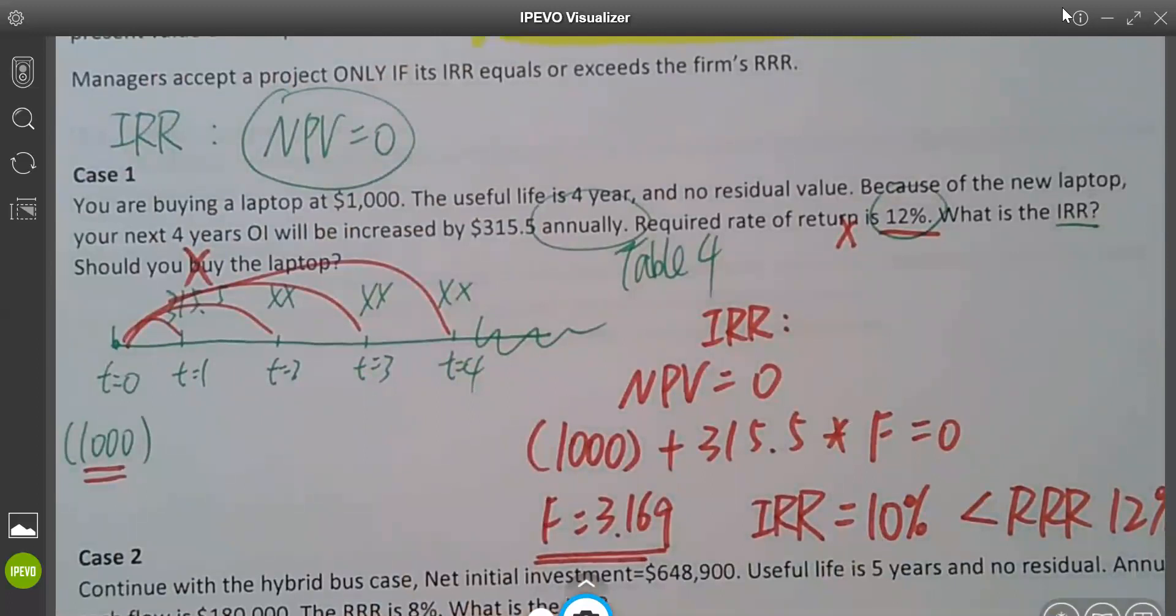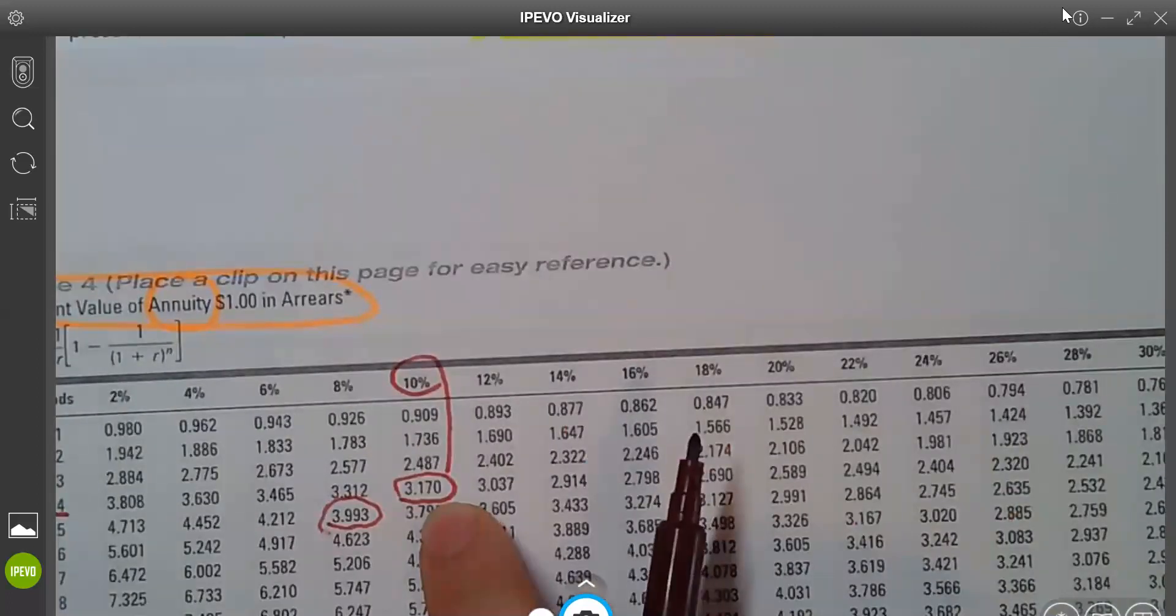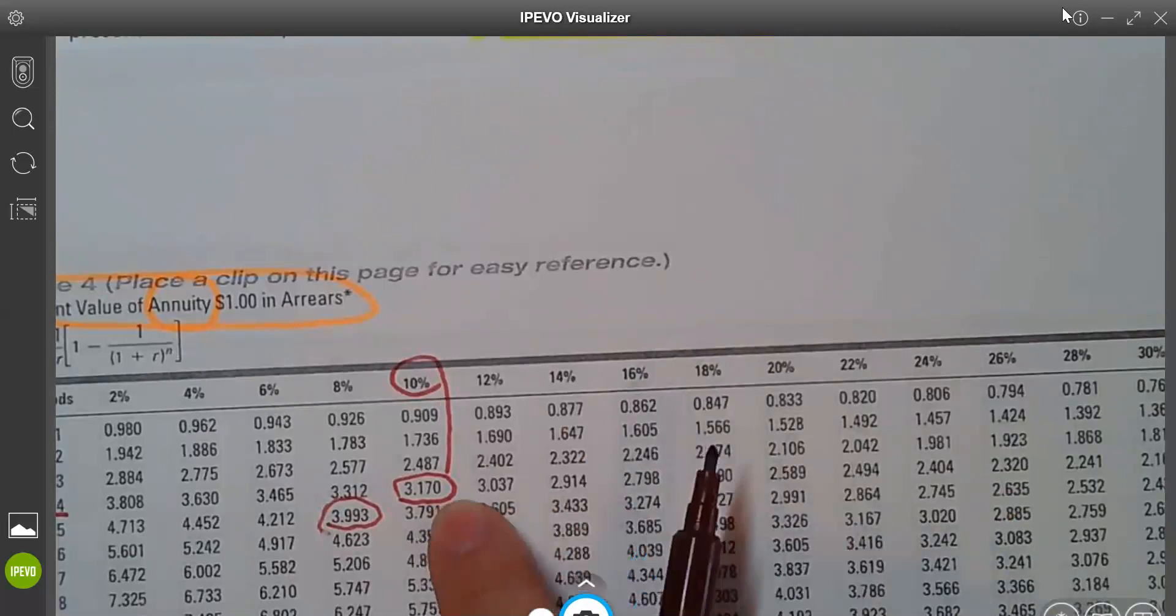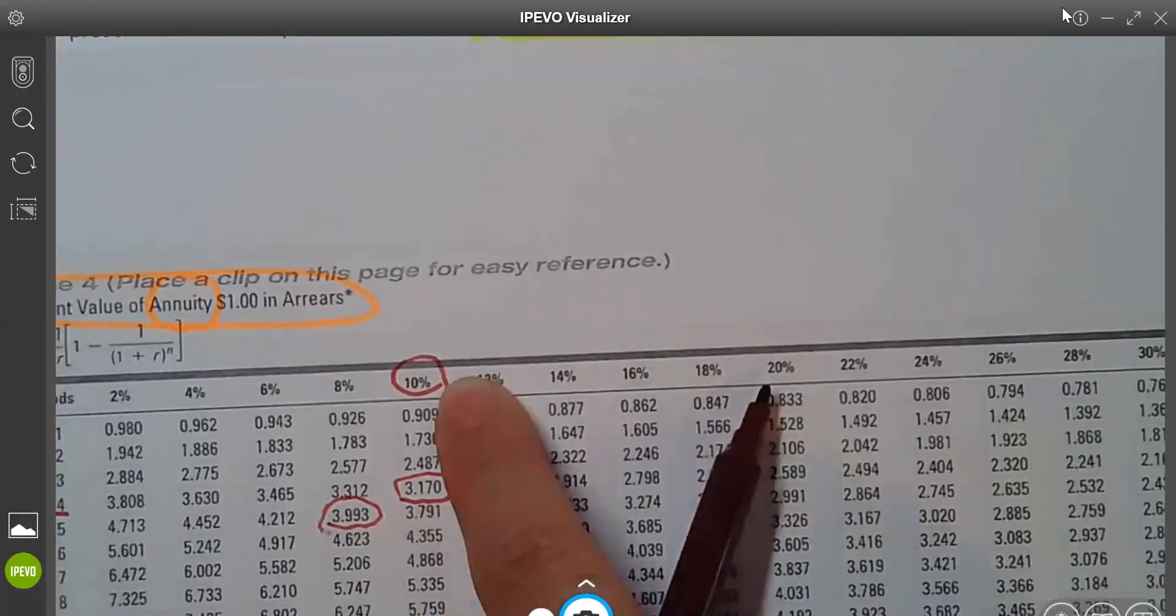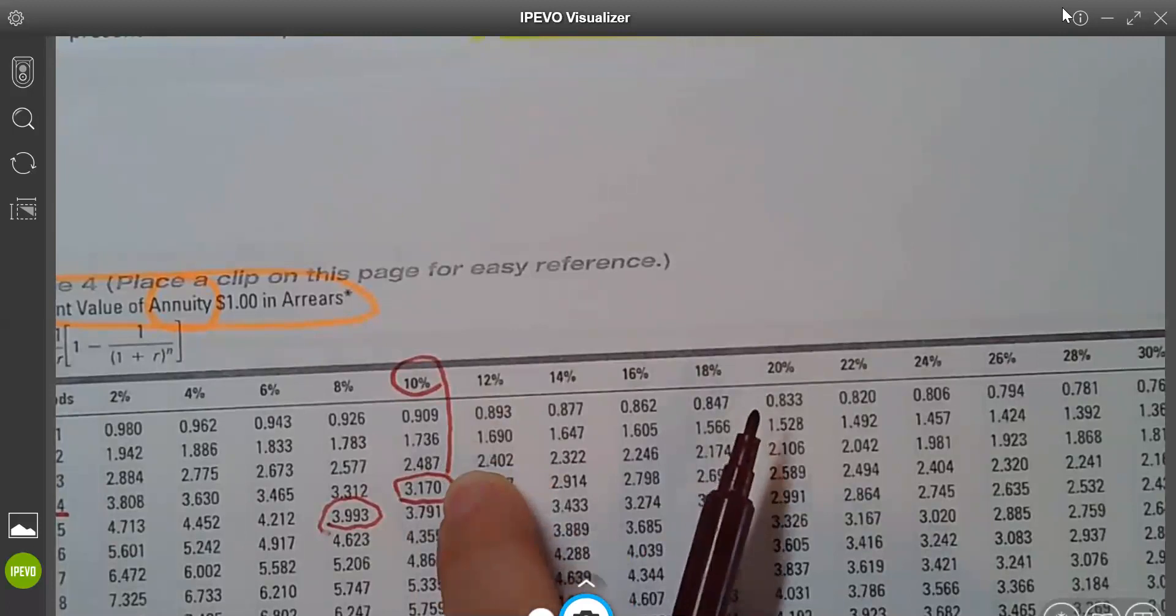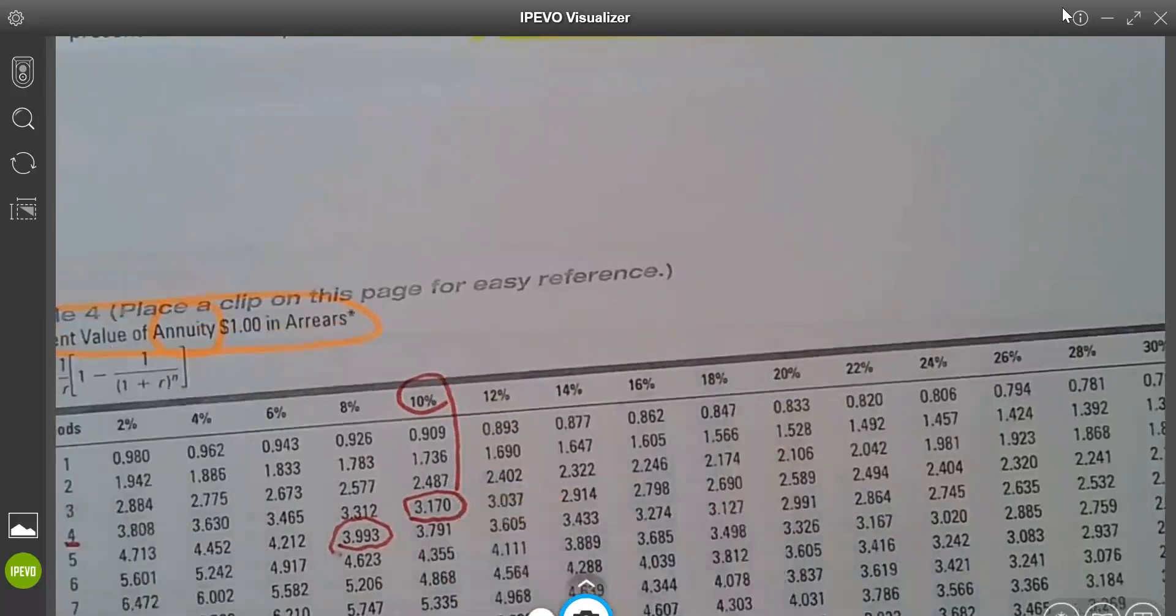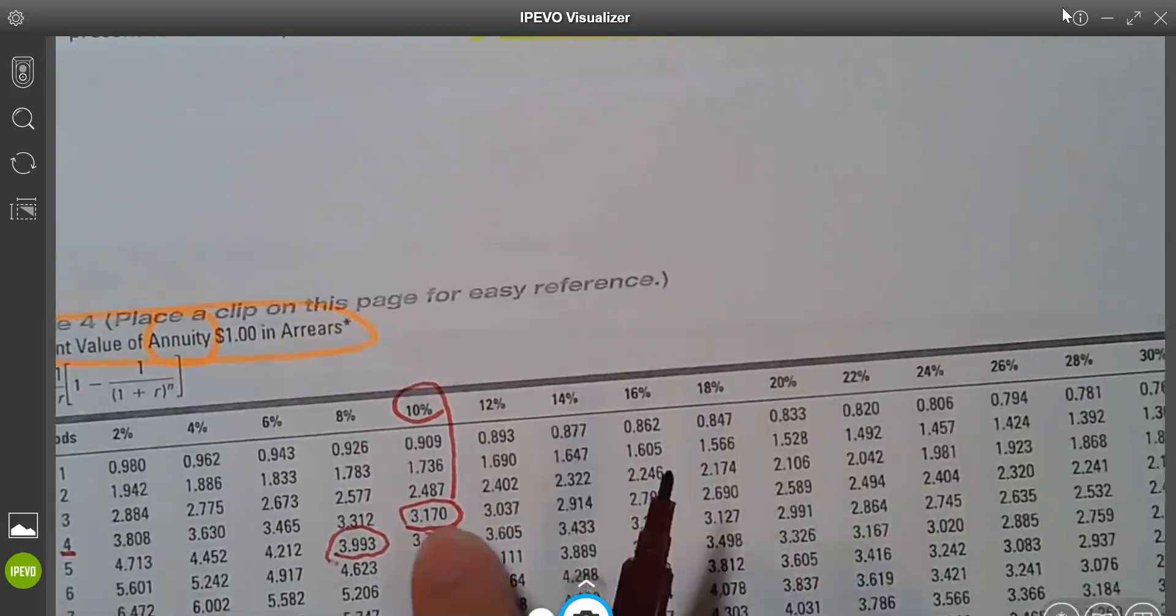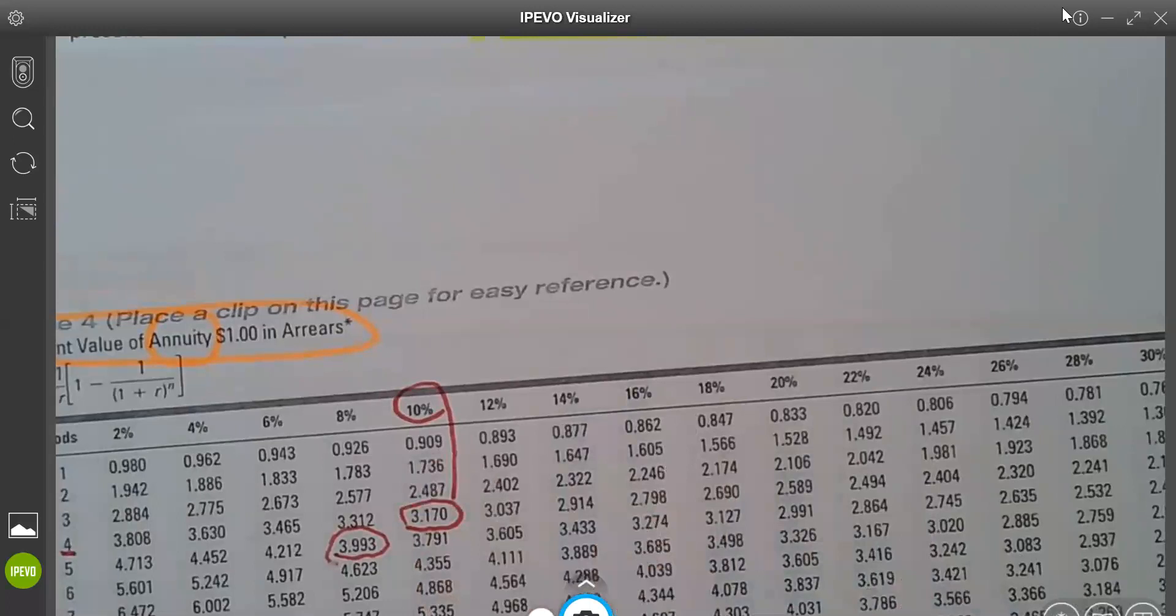Some students say, professor, this is coincidence, right? You just got 3.17. So what will happen if you don't get the number like 3.17? How can I know it's 11% or 10.9%, 10.8%, 11.5%? You can do that using your calculator, using your Excel. You can even Google a financial calculator. But don't worry in this class because I'm not going to test you for that one. If I test you IRR, I already did all the work. I made sure you can find the number from the table.